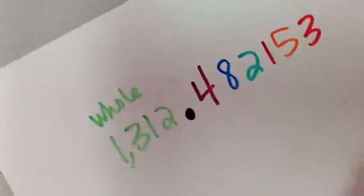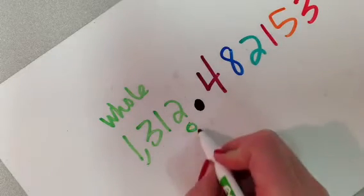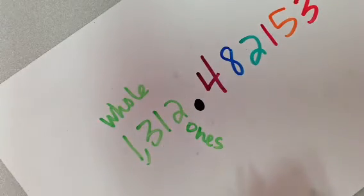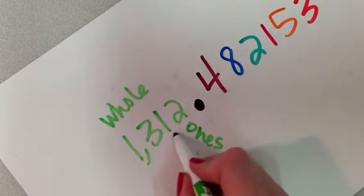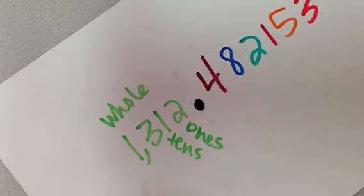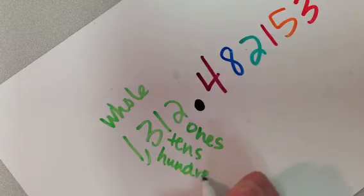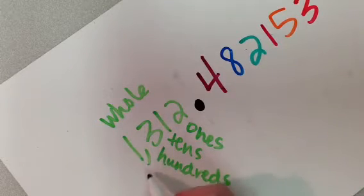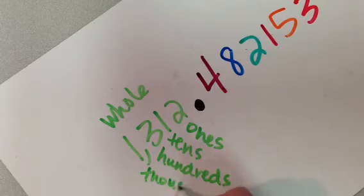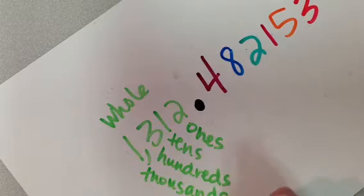And if I had to give them their titles, let me turn this. I would say that that two is in the ones place. This is in the tens place. Does this sound familiar? That three is in the hundreds place. That one is in the thousands place.